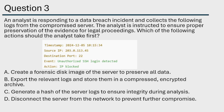Which of the following actions should the analyst take first? A: Create a forensic disk image of the server to preserve all data. Maybe. B: Export the relevant logs and store them in a compressed encrypted archive. If we're trying to ensure preservation, I could see where this could be valuable. C: Generate a hash of the server logs to ensure integrity during analysis. Another great answer — anytime we do digital forensics we want integrity. D: Disconnect the server from the network to prevent further compromise. No, I don't think so.